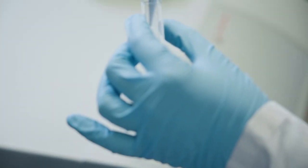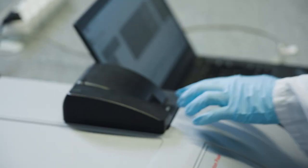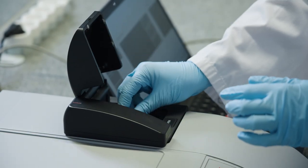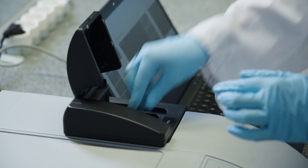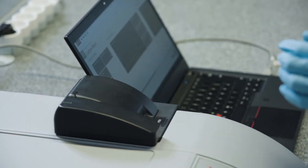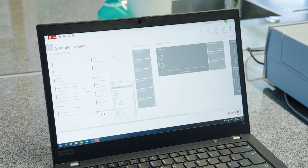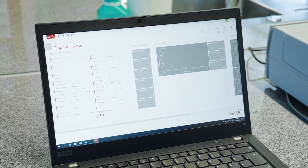For DLS measurements, the sample is placed in a cuvette. In the software, select the type of cuvette used, such as reusable glass or quartz, or disposable cuvette, then select the material type that is being analyzed and the solvent type.